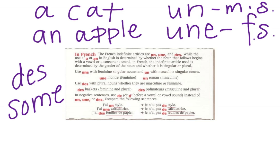In negative sentences, you use de or d' — that's d-apostrophe — before a vowel or a vowel sound, instead of un, une, or des. That's kind of like saying 'any,' as in 'we don't have any,' so it's negative.